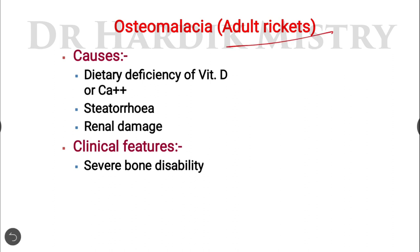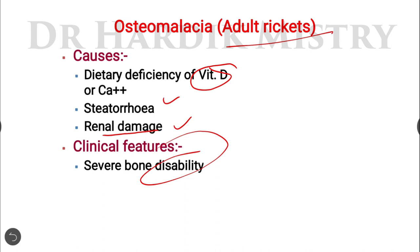Osteomalacia is known as adult rickets. Causes include dietary deficiency of vitamin D or calcium, steatorrhea, and renal damage. Renal damage causes osteomalacia because vitamin D activation occurs through the kidney — when the kidney is damaged, vitamin D activation is impaired, leading to decreased vitamin D, decreased calcium concentration, and ultimately hypocalcemia. The clinical feature is severe bone disability.